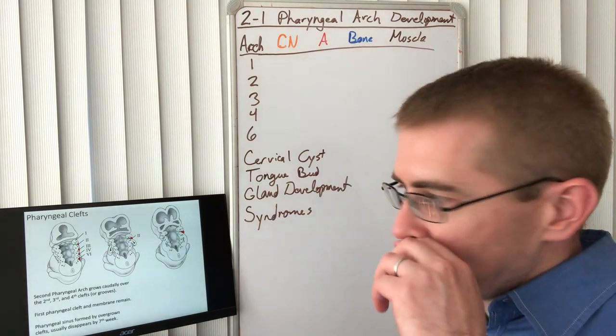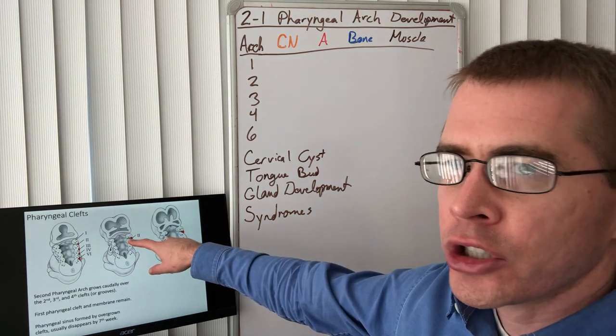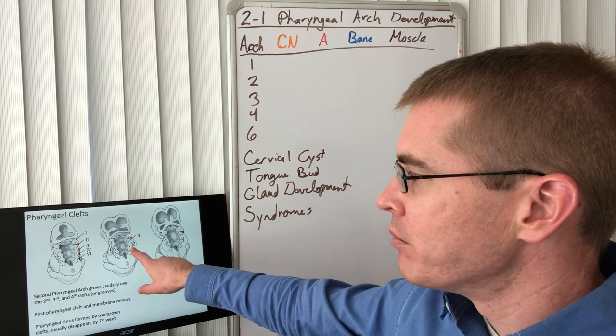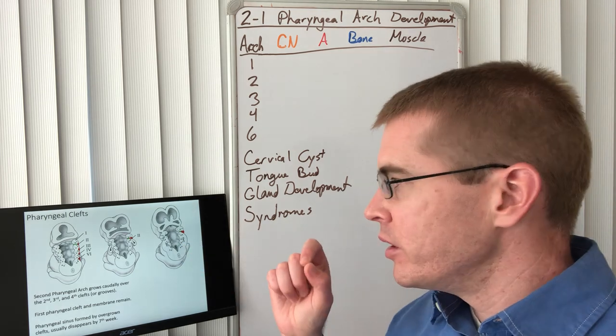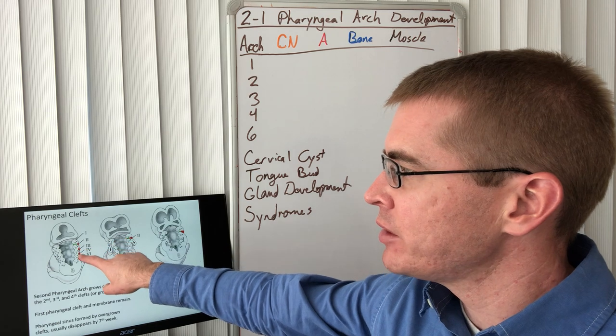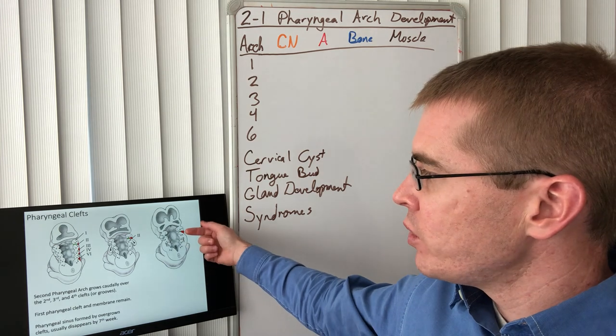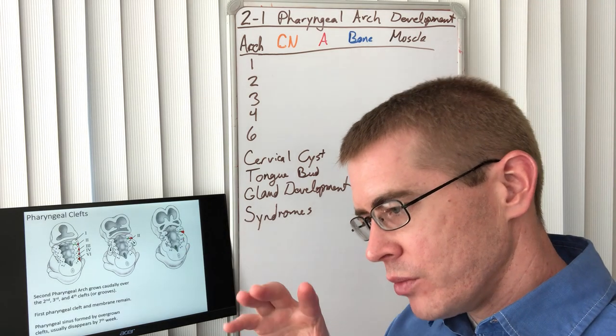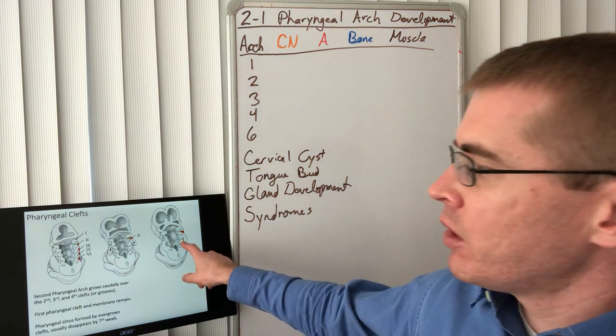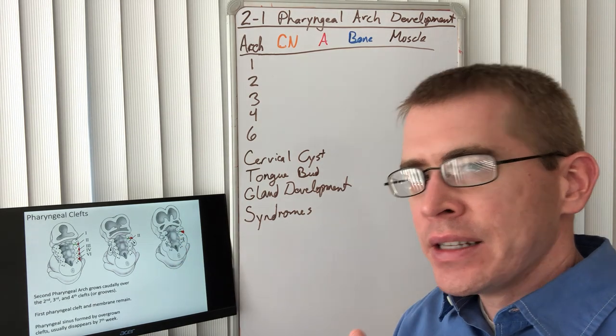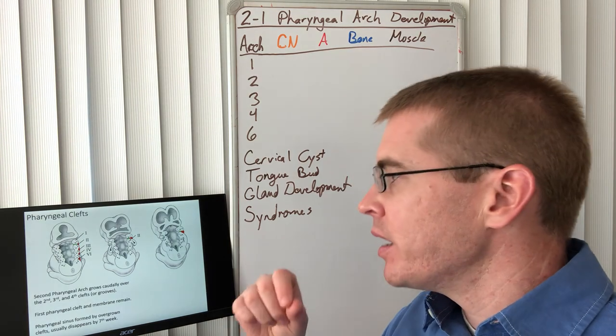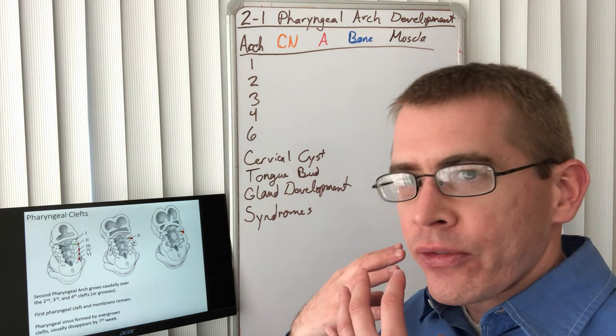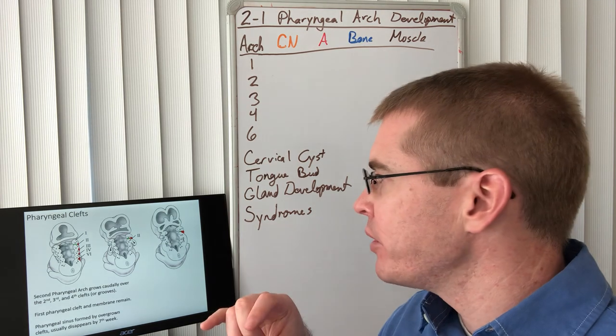Now let's talk about the pharyngeal clefts. During development the second pharyngeal arch ends up passing over, growing over the third arch and merging with the fourth arch, overgrowing the clefts on the outside. We see here those clefts in red on the outside. We see the second arch growing over. So the first pharyngeal cleft and membrane are intact. They remain, but the rest are overgrown. This results in what's called a pharyngeal sinus. A pharyngeal sinus is this small little pocket that is usually obliterated by the seventh week, but there are cases where it doesn't.